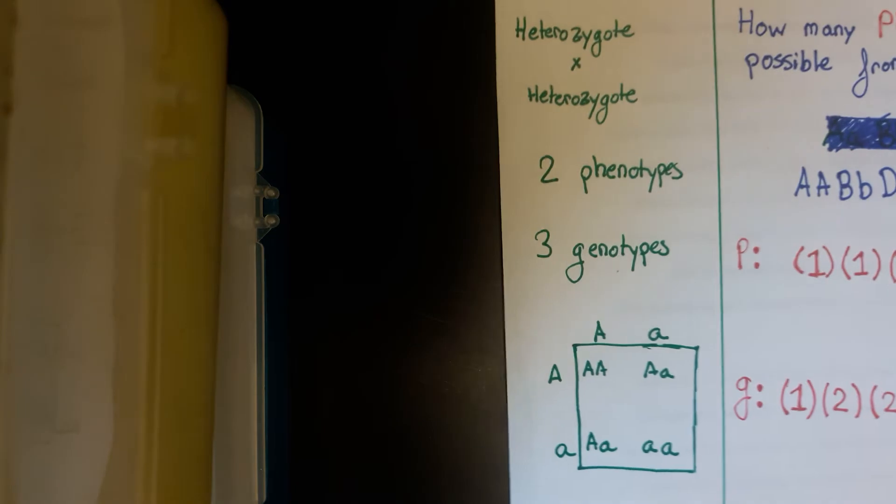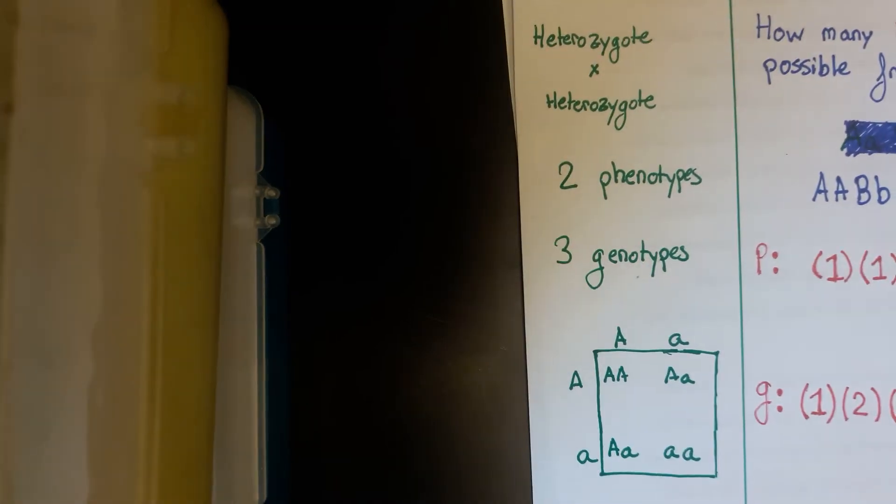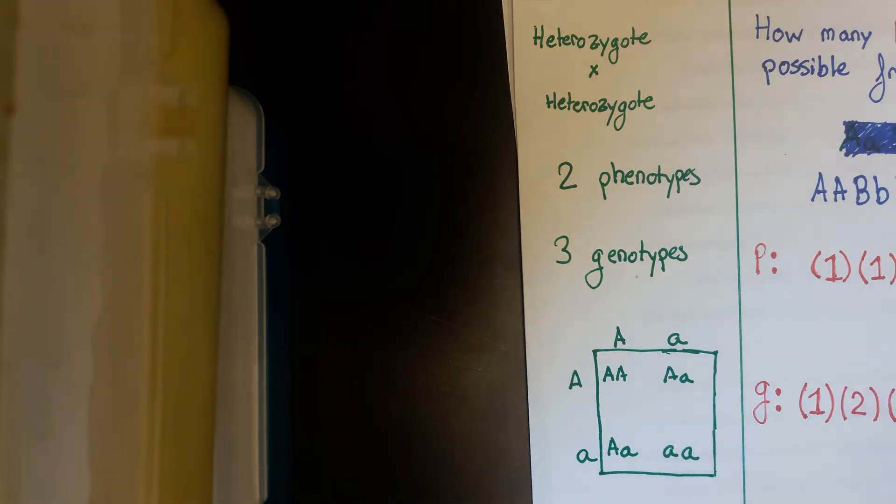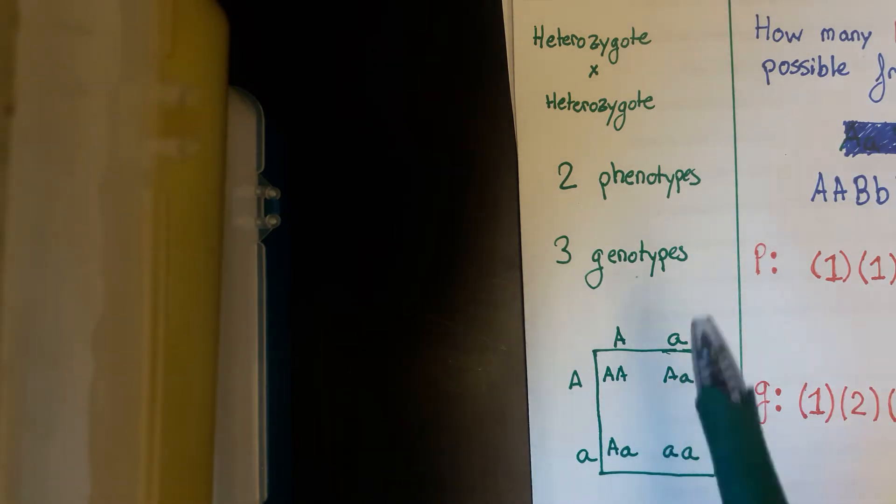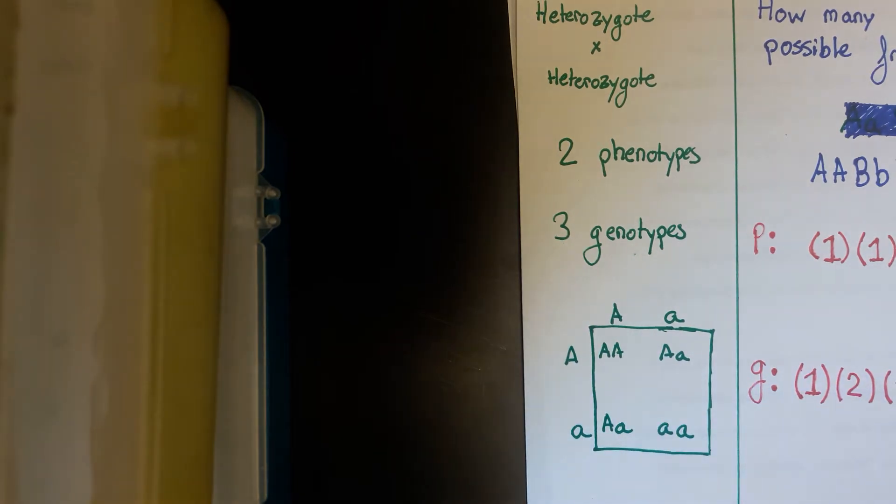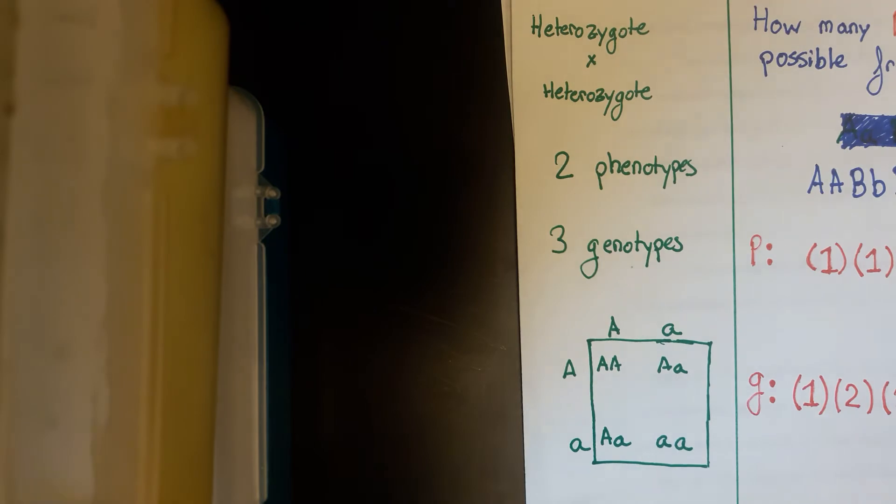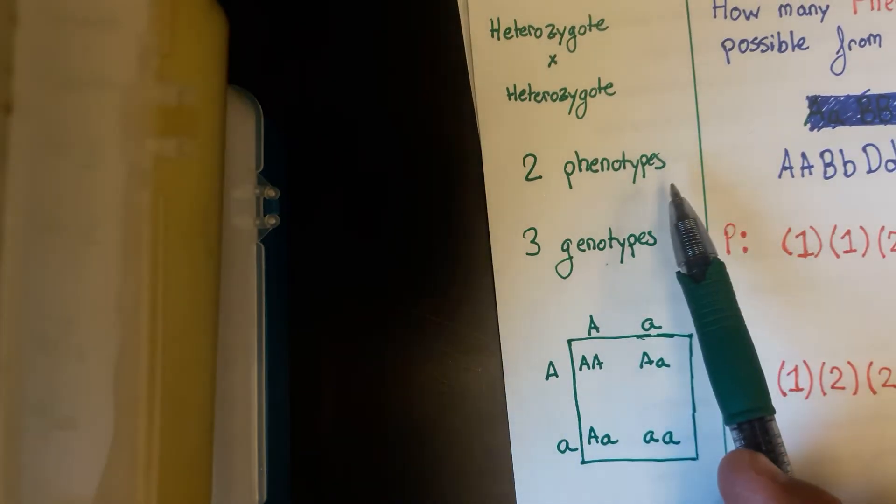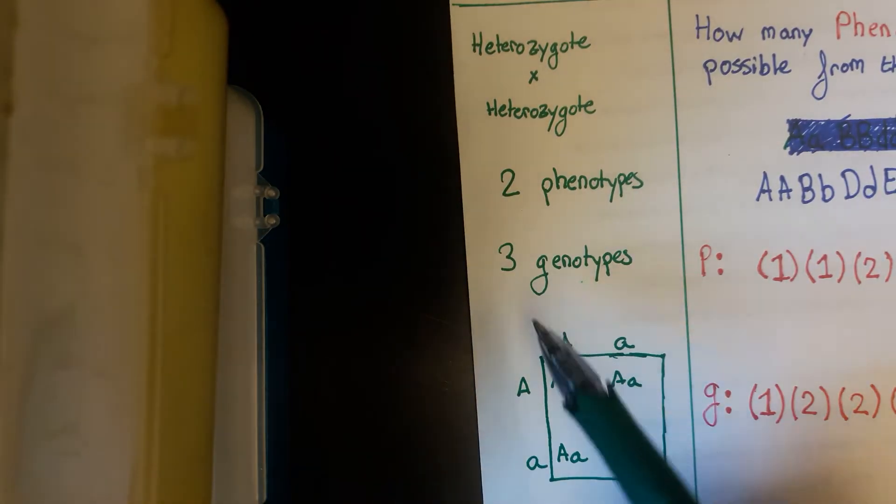Here we have, first off, let's talk about this, which is the formula that you guys know. It's the one that I just talked about like a second ago. So here we're crossing a heterozygote, big A little a, times another heterozygote, big A little a. As you can see, there's a few possible, there's two phenotypes and three genotypes. Why is that?